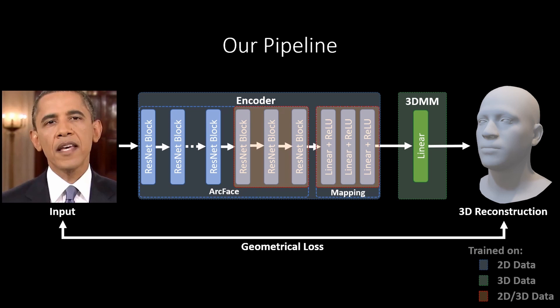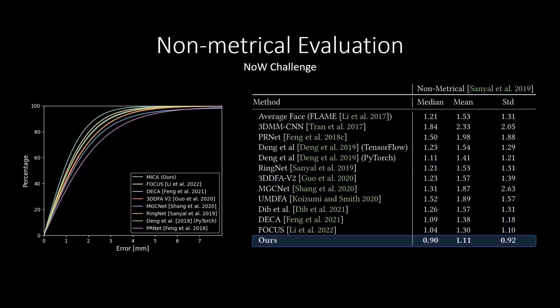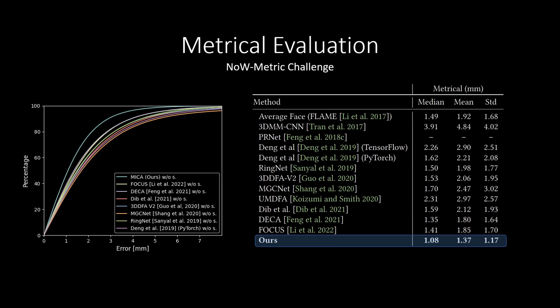Our dataset consists of eight smaller datasets which we unified. For each scan, we registered the FLAME mesh to obtain a common topology across all subjects, resulting in around 2300 meshes. Using this unified data, we train our model to achieve state-of-the-art results on the current non-metrical benchmarks with an error improvement of 15% in terms of the mean. We achieve an even more significant improvement of 24% on our proposed metrical evaluation benchmark, compared to the state-of-the-art method DICA of Fong et al.